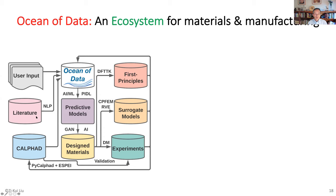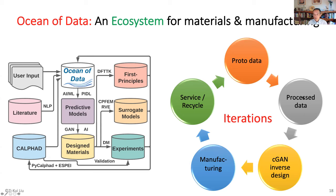The idea is to get the tool data and then do design. It is not a one-way system; it is a cycle — an ecosystem of materials and manufacturing. You use input data from the literature and the CALPHAD database, put them together, get an ocean of data, do material design with new neural networks, design new materials, do first-principles calculations, develop physical surrogate models, do experiments — all of them generate new data that goes back into the ocean of data and also back into the CALPHAD database. The database continuously improves, leading to better and better design and better materials. Thank you for your attention. Again, congratulations to Mark for receiving the ASM Gibbs Award.